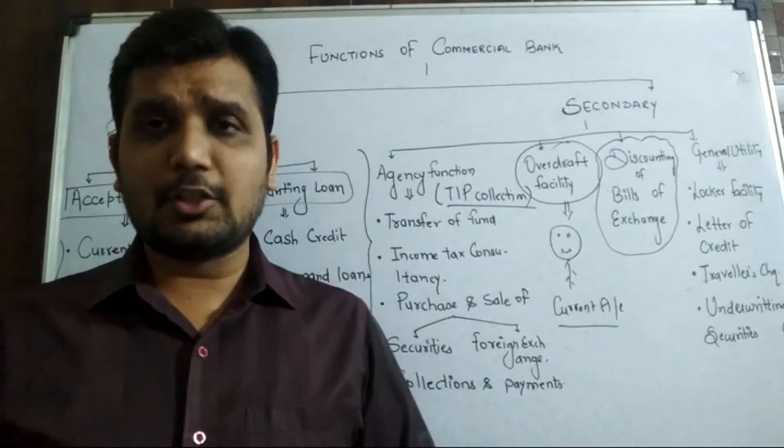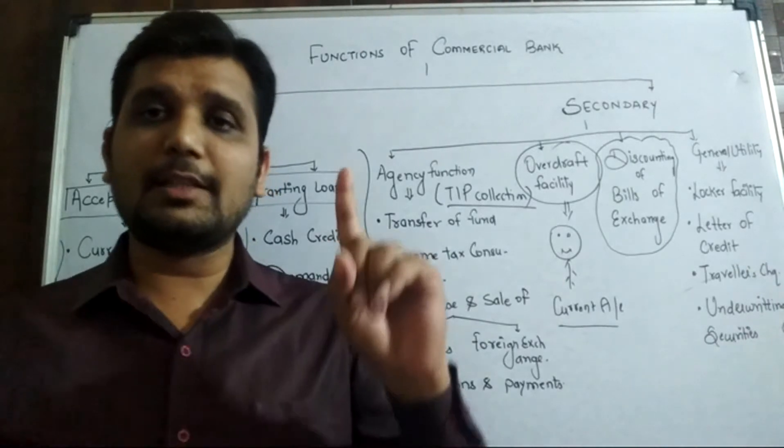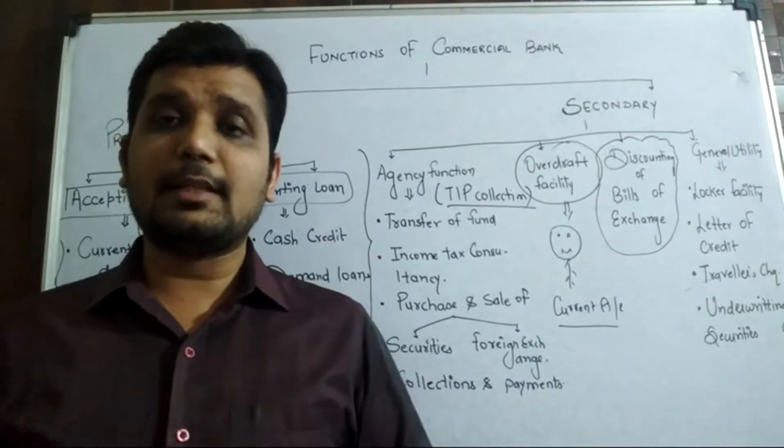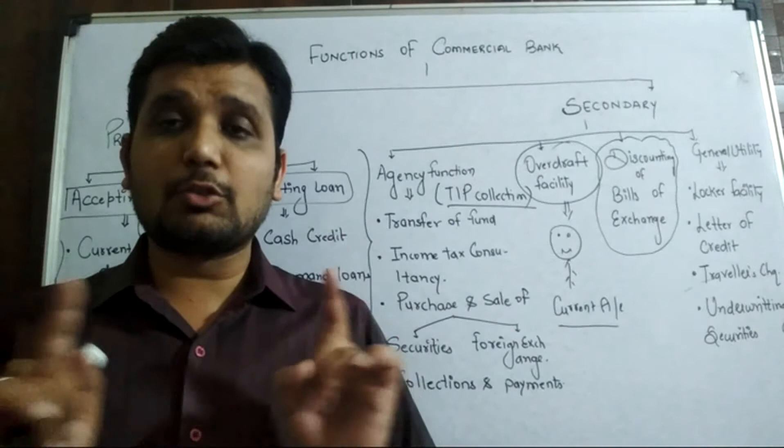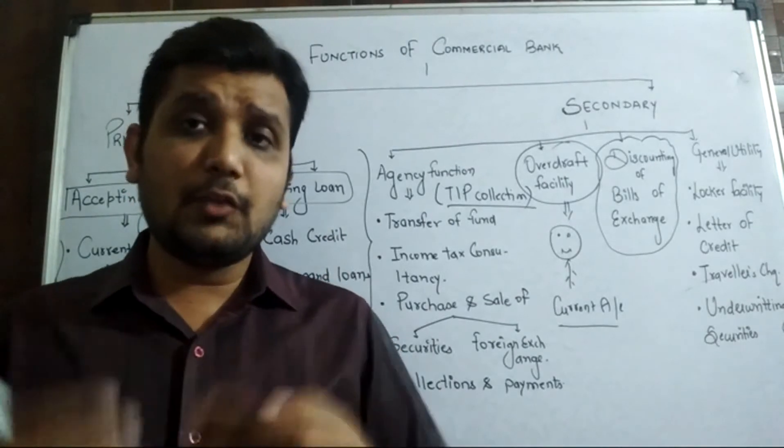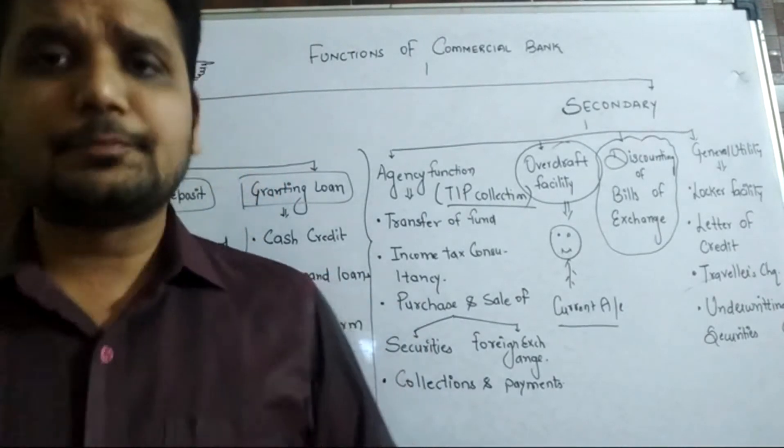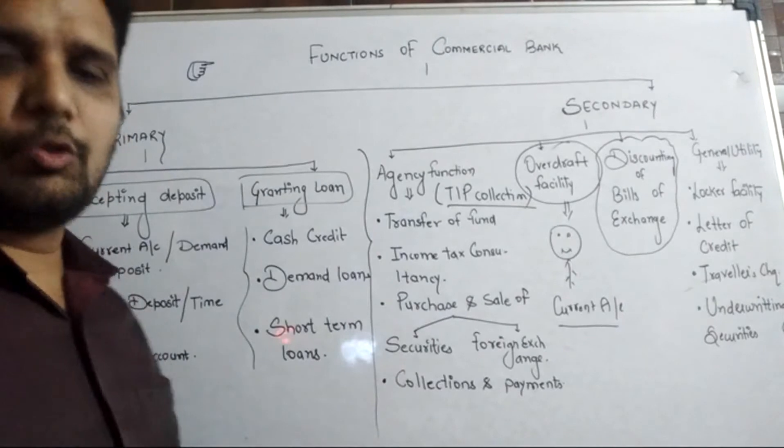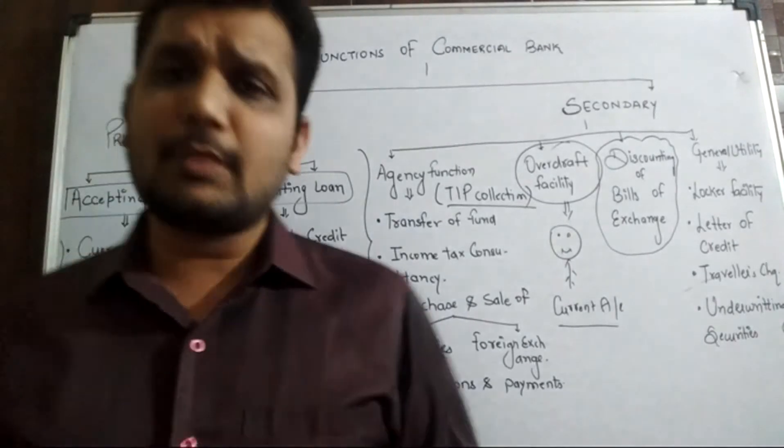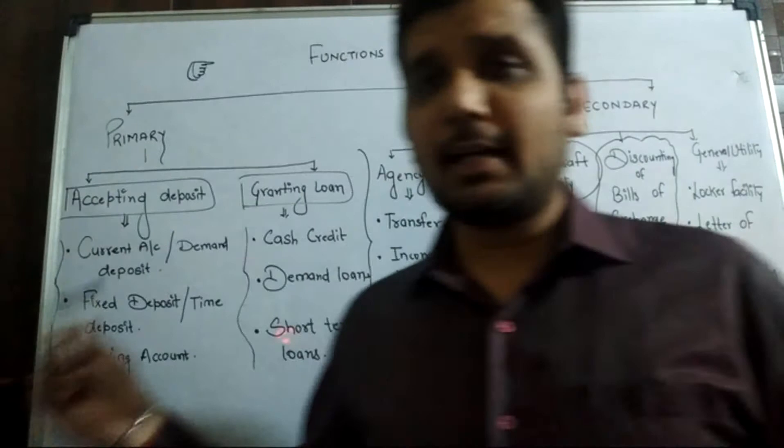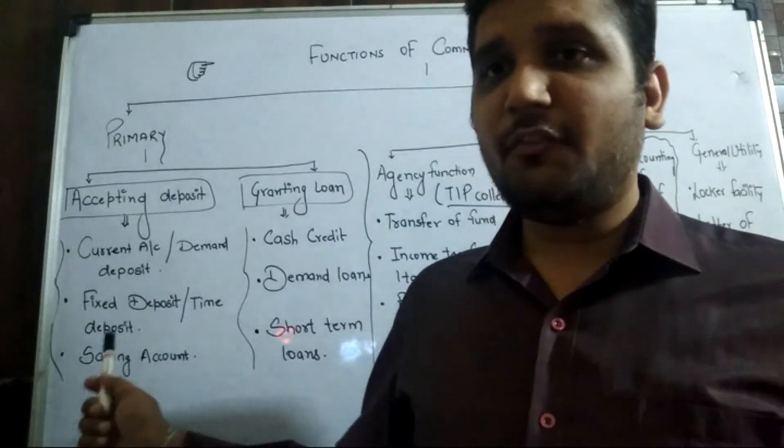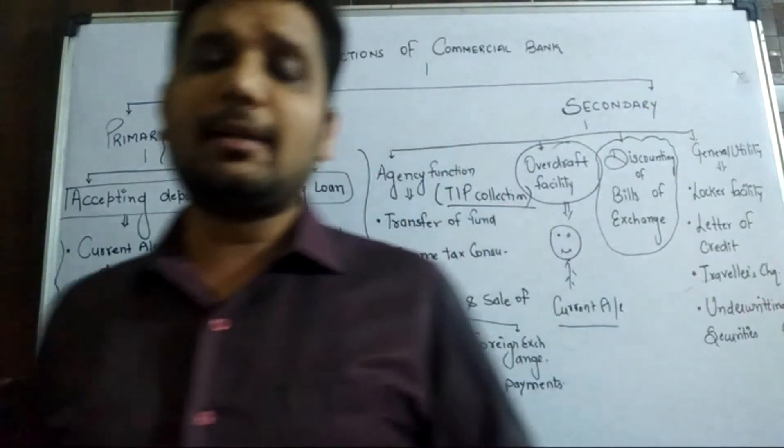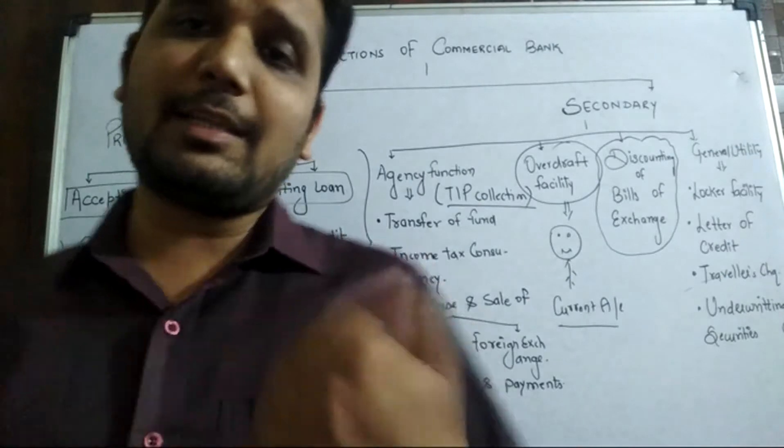There are two functions basically performed by the commercial bank. One is the primary, the other is the secondary. Primary functions are in two parts. We distributed primary into two parts: accepting deposit and granting loans. Banks accept money in three ways - current account, also known as demand deposit, fixed deposit, also known as term deposit, and third, saving account.